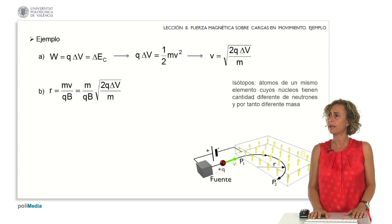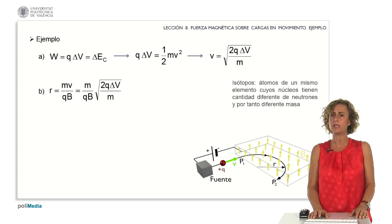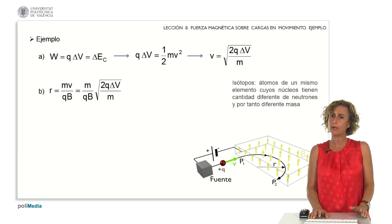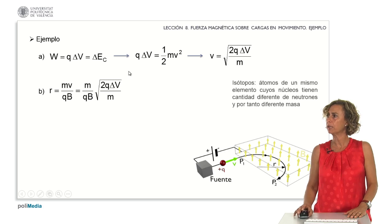To calculate the orbit's radius, theoretically, we use the formula mass multiplied by velocity divided by the particle's charge times the value of the magnetic field. By substituting the expression for velocity obtained in the previous section, we can compute the radius of the orbit.